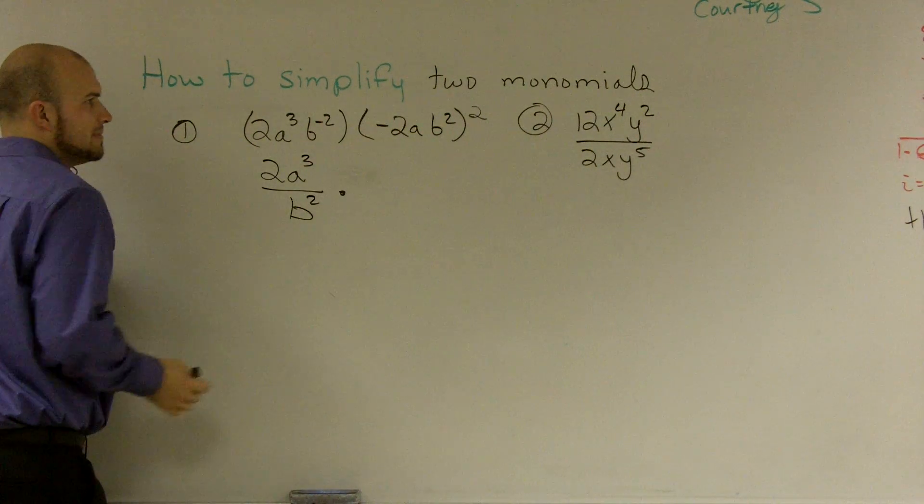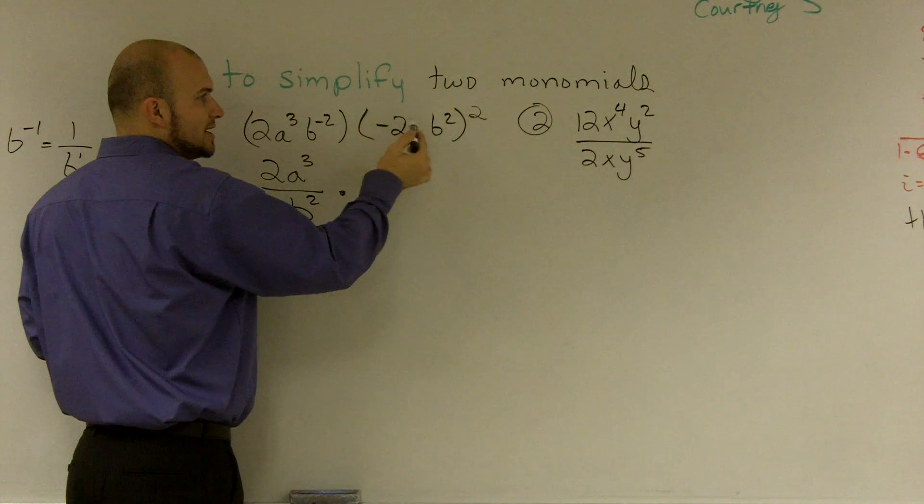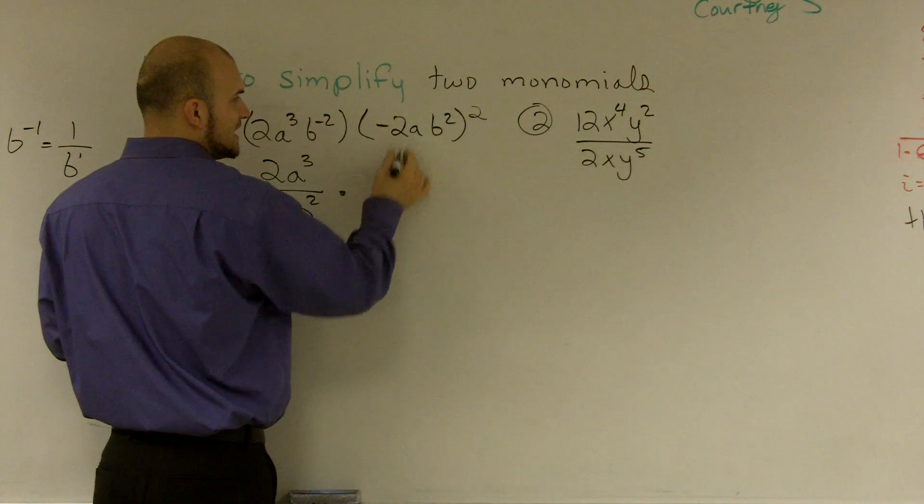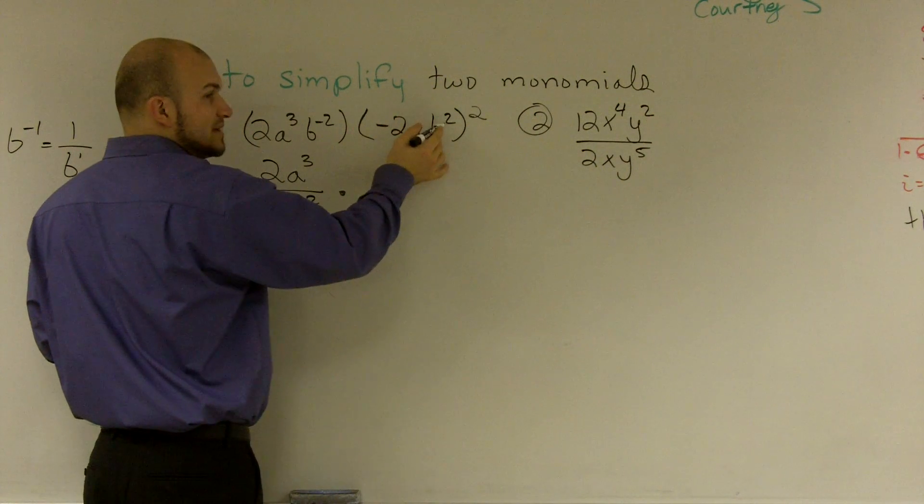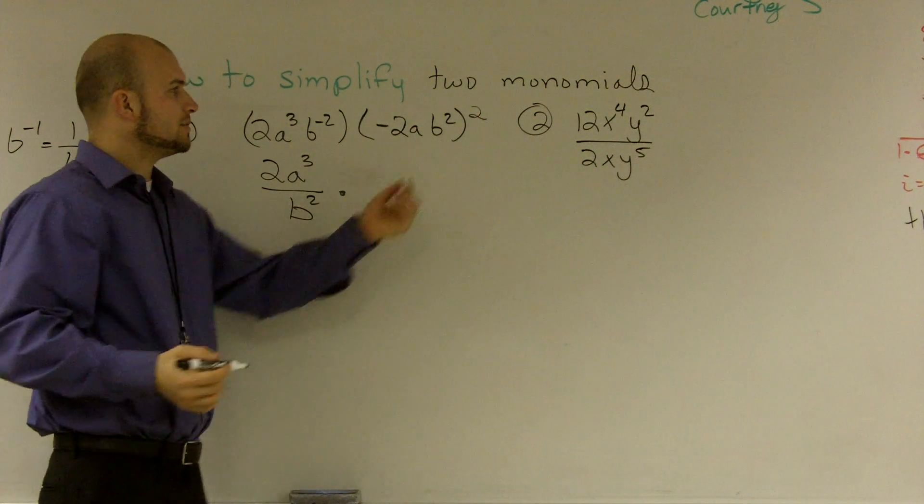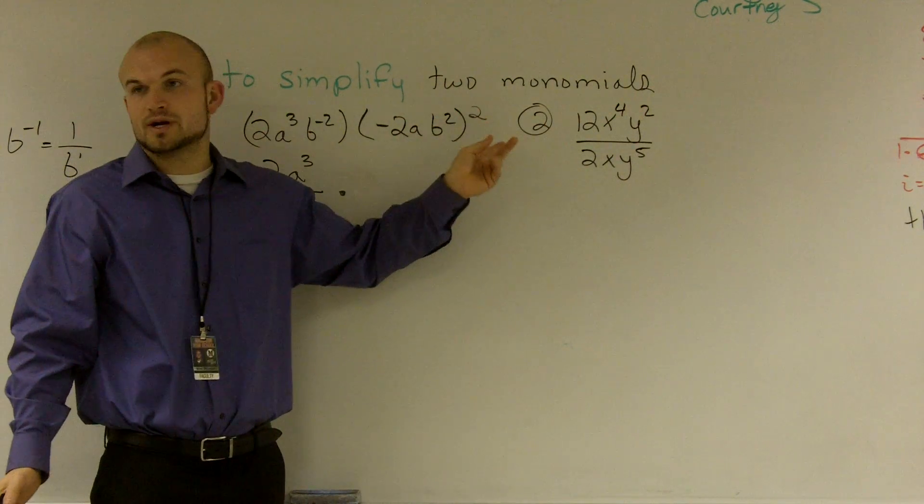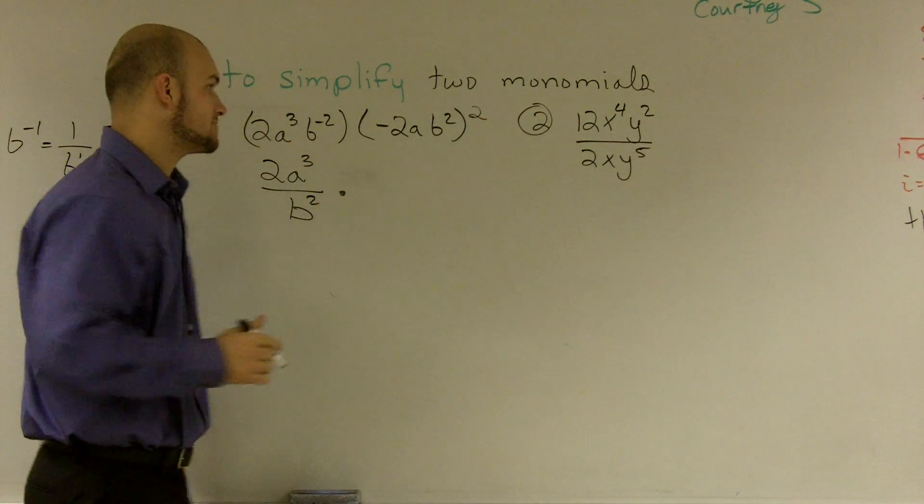Multiplied by, since this whole monomial is being squared, I need to square each and every term that's inside of there. So I'm going to have negative 2 squared, a squared, and b squared squared. And remember, when you already have an exponent and you're going to square it again, you're actually going to multiply the two exponents.